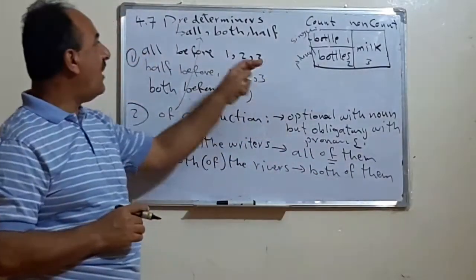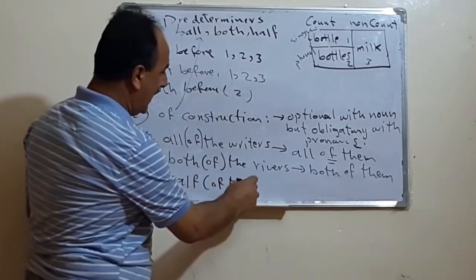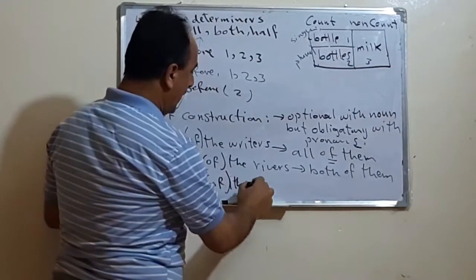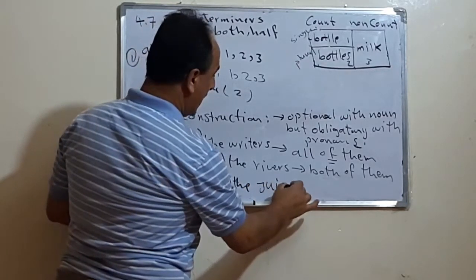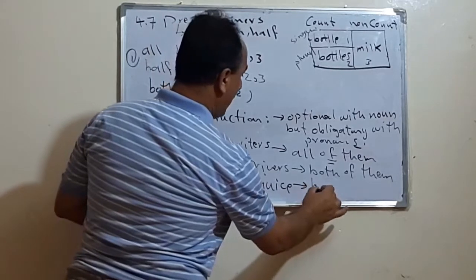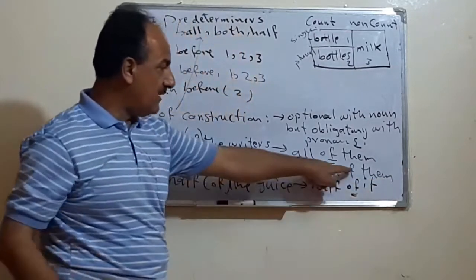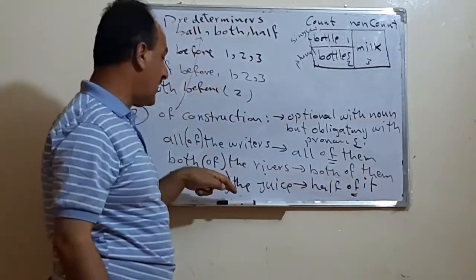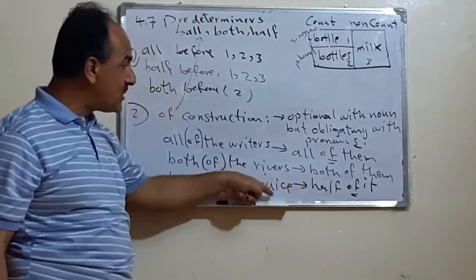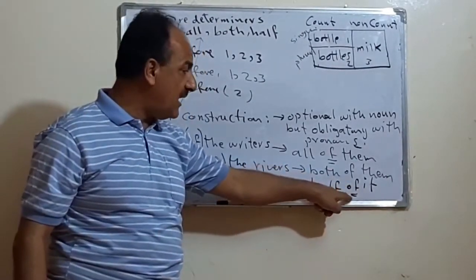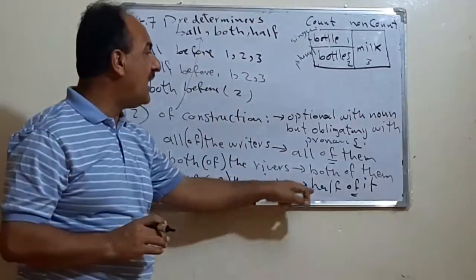So here 'of' is obligatory with a pronoun. Of course, we have two or three more features concerning the predeterminers. This is what we call the pronoun use — means we can replace nouns with these determiners. If we mention nouns, we can replace those nouns with these predeterminers. When we change juice into the pronoun 'it,' 'of' becomes obligatory.